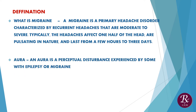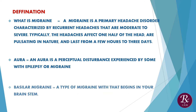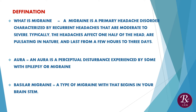Aura: An aura is a perceptual disturbance experienced by some with epilepsy or migraine. Basilar migraine: a type of migraine that begins in your brain stem.